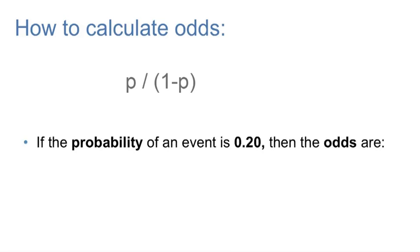You've been given the probability of an event is 0.20. Then let's calculate the odds using this formula. So the numerator will be 0.20. Then you will divide it by the quantity 1 minus 0.20, which gives you 0.25. Or you can have the ratio constructed as the ratio 1 to 4.